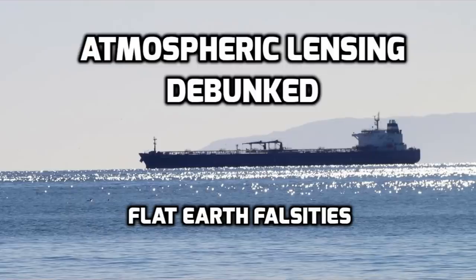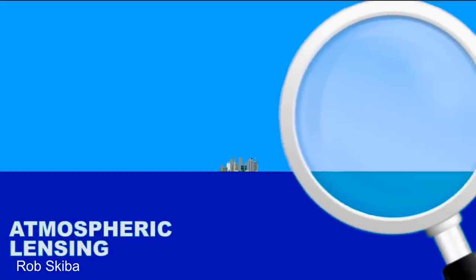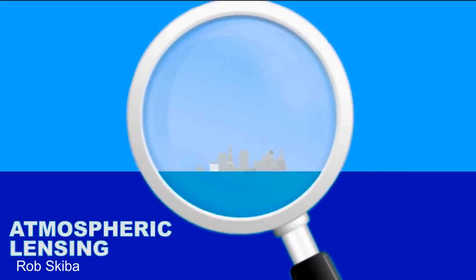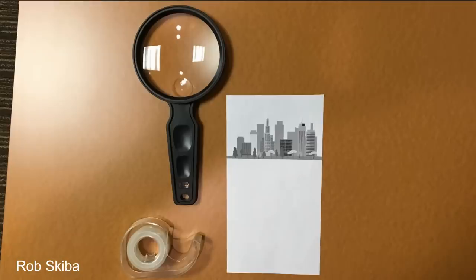Many flat earthers try to use what they call atmospheric lensing to explain why boats or buildings appear hidden at the bottom by the horizon. This was popularized in a few videos by Rob Skiba, in which he did a few experiments with a magnifying glass and an image of a distant city, which appear to explain how a city can appear hidden at the bottom on a flat earth.